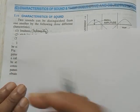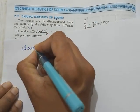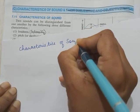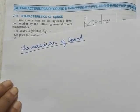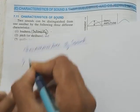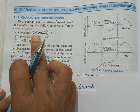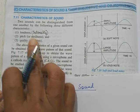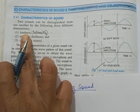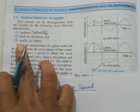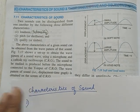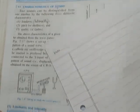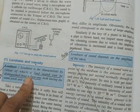This you have done in 8th standard but I don't know how much you remember. When you talk about sound, what are its various characteristics? Three characteristics are there: loudness - the other name is intensity; pitch or shrillness; and quality or timbre. Please get familiar with these terms - loudness or intensity, pitch or shrillness, quality or timbre. These are the three characteristics of sound we are going to study.